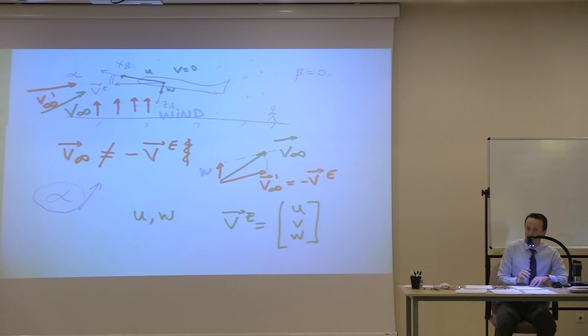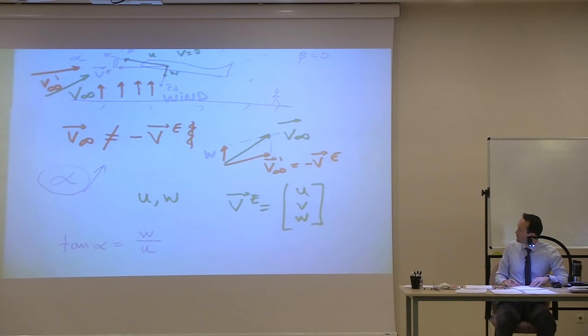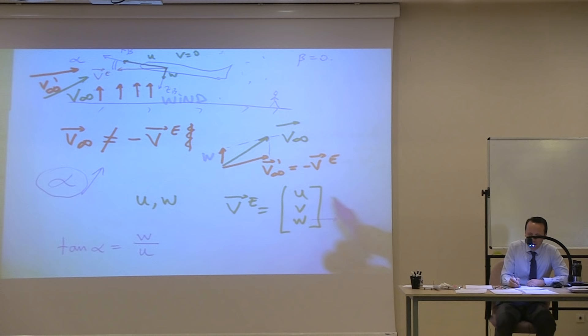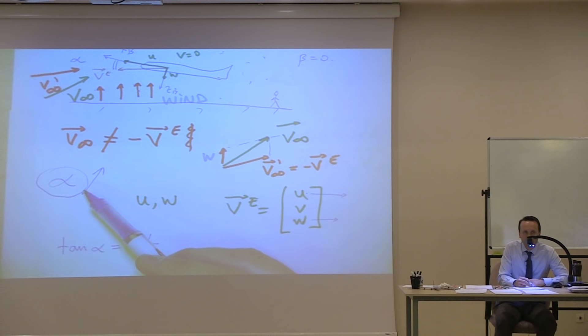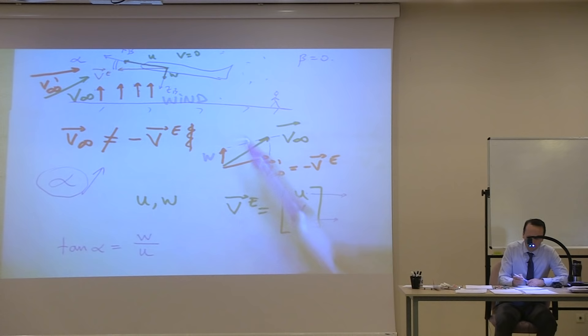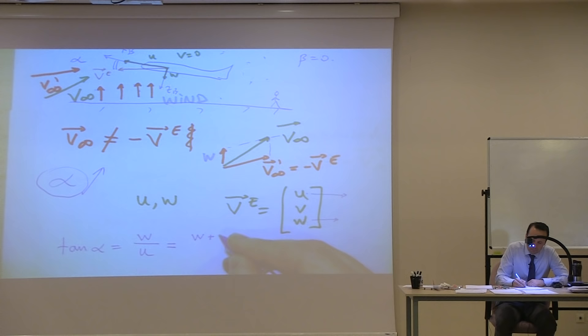Alpha has increased. That means the formula tangent(alpha) = W/U is no longer accurate in the presence of wind, because W and U belong to the velocity of the airplane with respect to Earth and don't take the wind into account. That formula is only true when there is no wind.